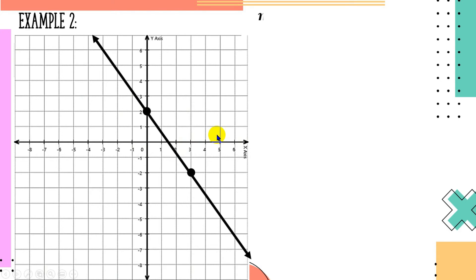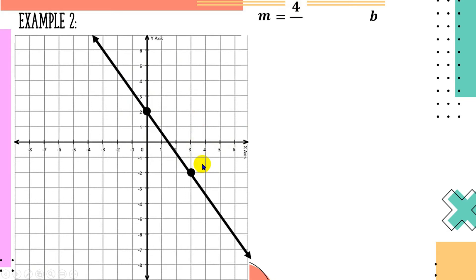For example number 2, we again have a graph. Same as example 1, we need to find the slope and y-intercept. For the slope, we apply the ratio of rise over run — this time we count units upwards then units to the left. Since it's to the left, the slope will be negative. Counting upwards: 1, 2, 3, 4 — there are 4 units. From that point to the second point: 1, 2, 3 — there are 3 units, and that will be negative 3. So the slope is negative 4 over 3.